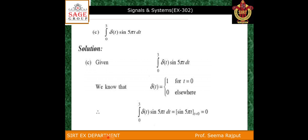Another example is the integration from 0 to 3 of δ(t) sin(5πt) dt. Here δ(t) alone means δ(t) equals 1 for t equal to 0 and 0 elsewhere. The remaining function is sin(5πt), and putting t equal to 0 gives sin(0), which equals 0. So the answer is 0.